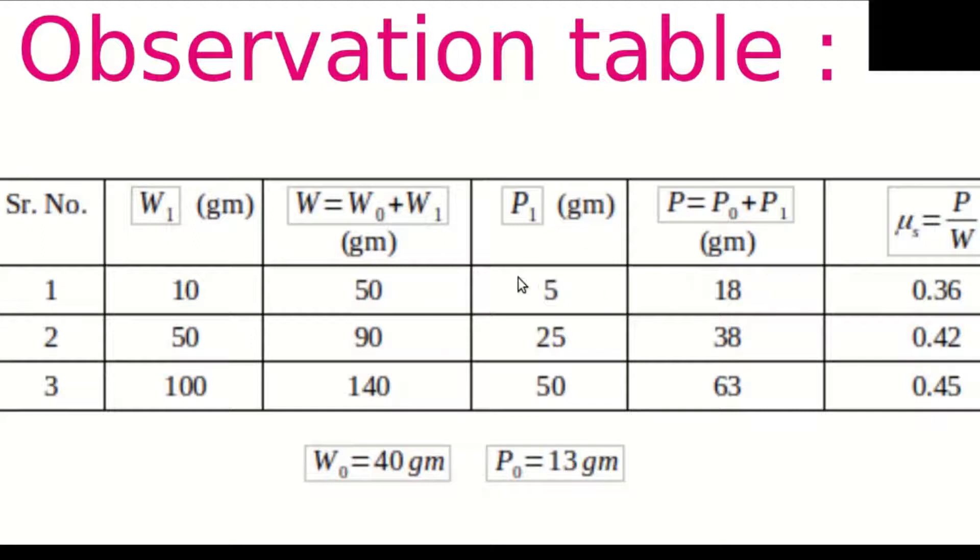Similarly, we have to add 13 to get total weight of the pan or we will call this as effort. So, 5 plus 13 is 18, 25 plus 13 is 38, and 50 plus 13 is 63.